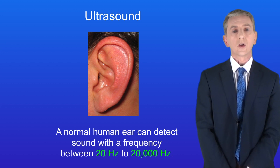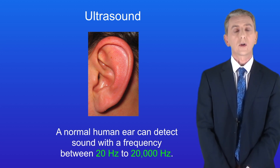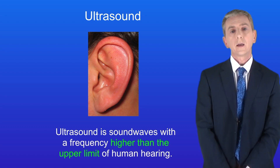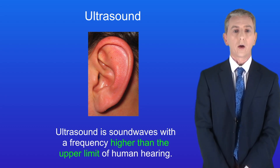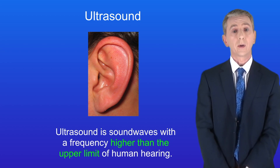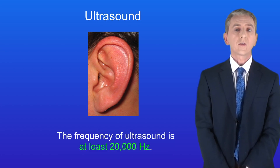In the last video we saw that a normal human ear can detect sound with a frequency between 20 hertz and 20,000 hertz. Ultrasound is sound waves with a frequency higher than the upper limit of human hearing, so the frequency of ultrasound is at least 20,000 hertz.